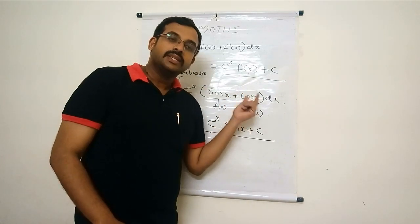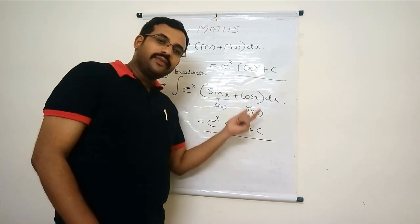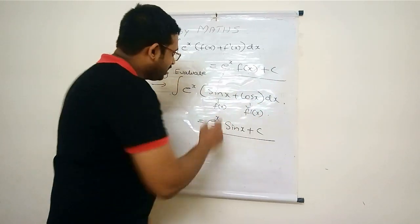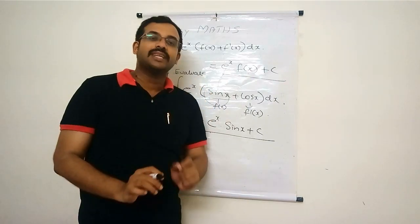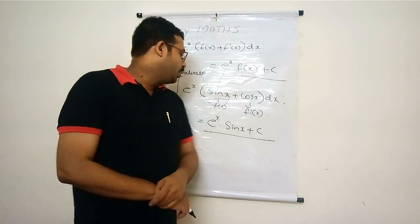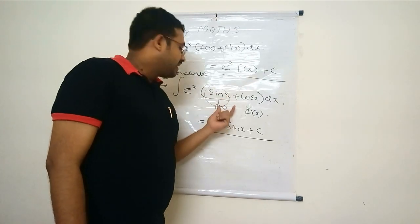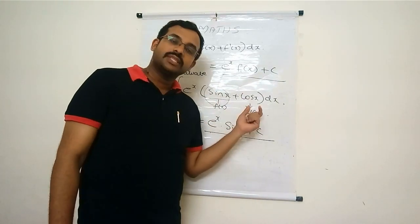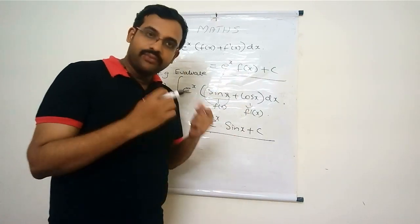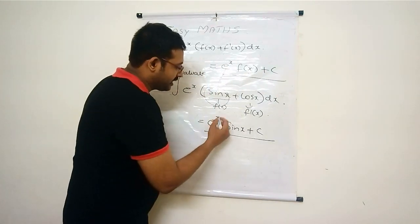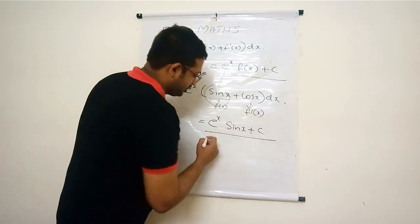We cannot choose cos x as f(x) because the derivative of cos x is −sin x, but here we have +sin x, not −sin x. So we choose sin x as f(x) and cos x as f'(x), giving the answer eˣ·sin x + C.